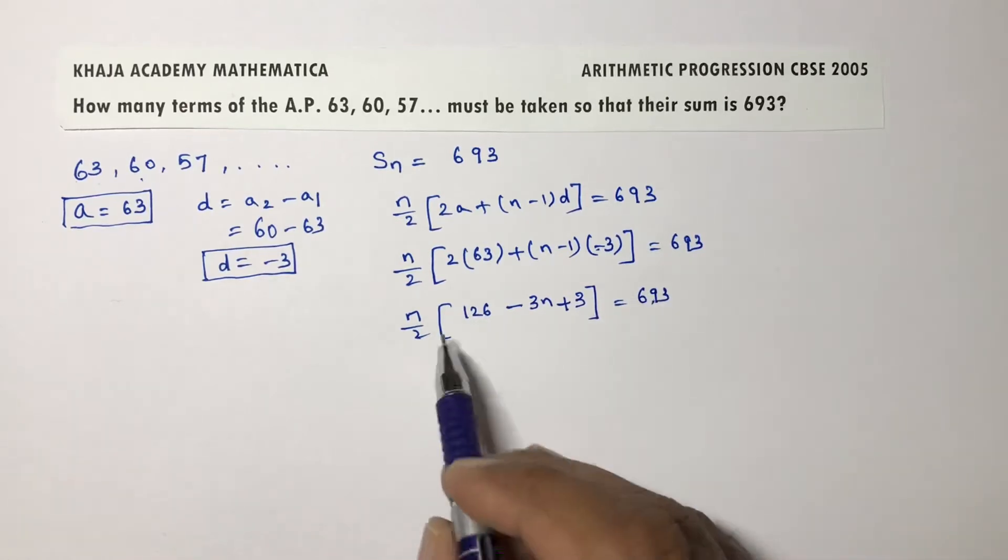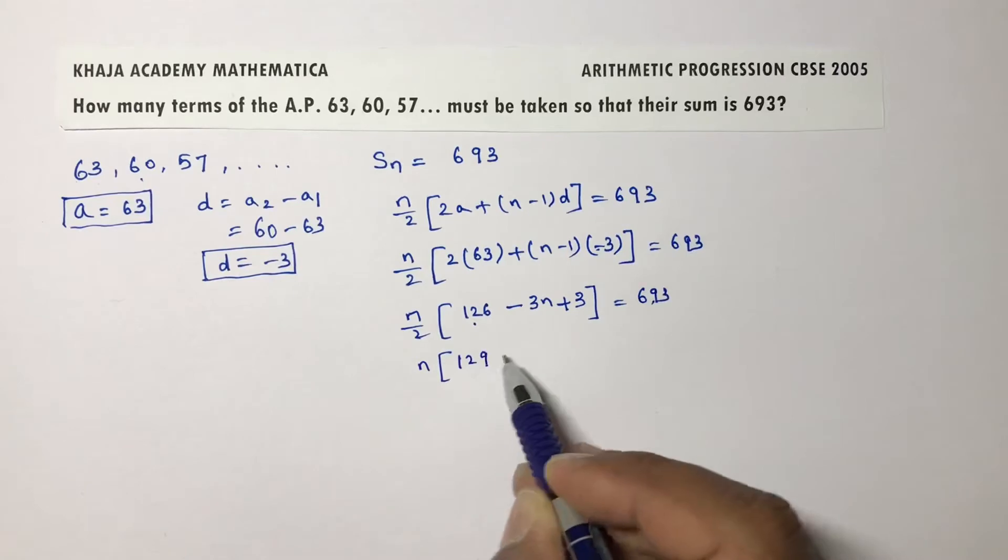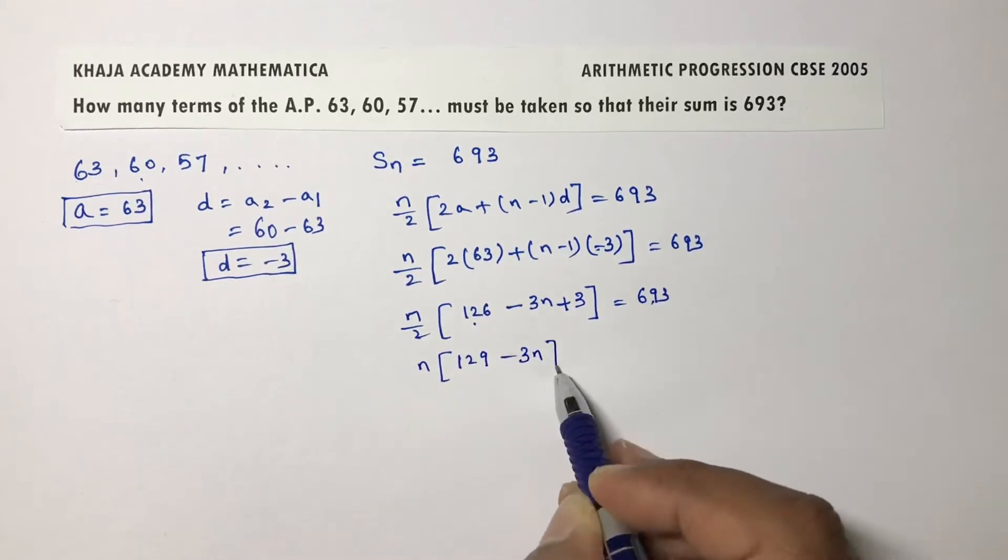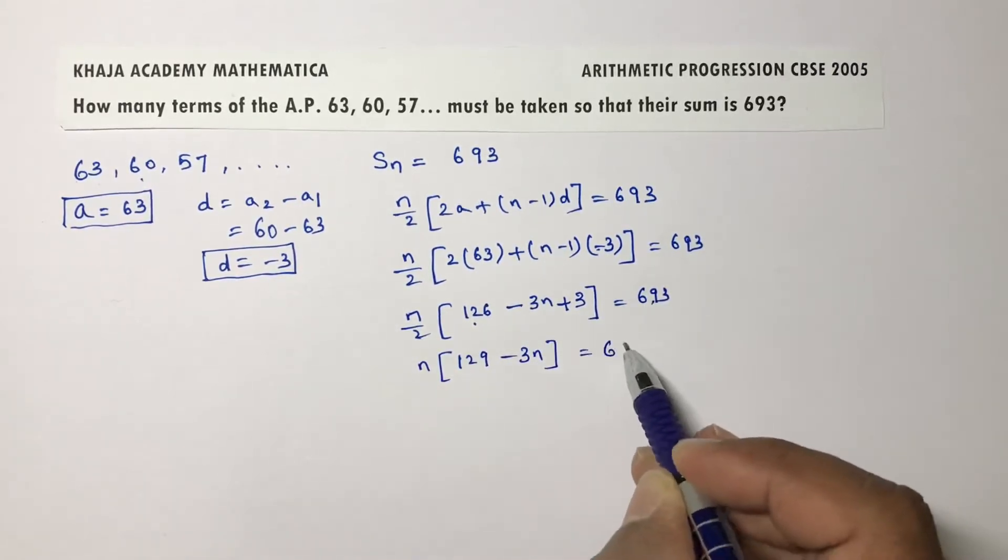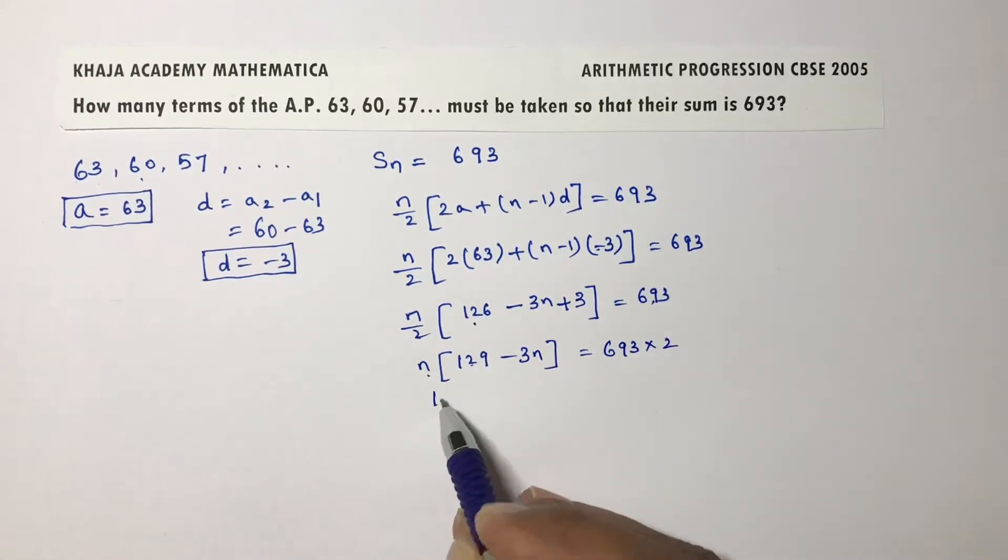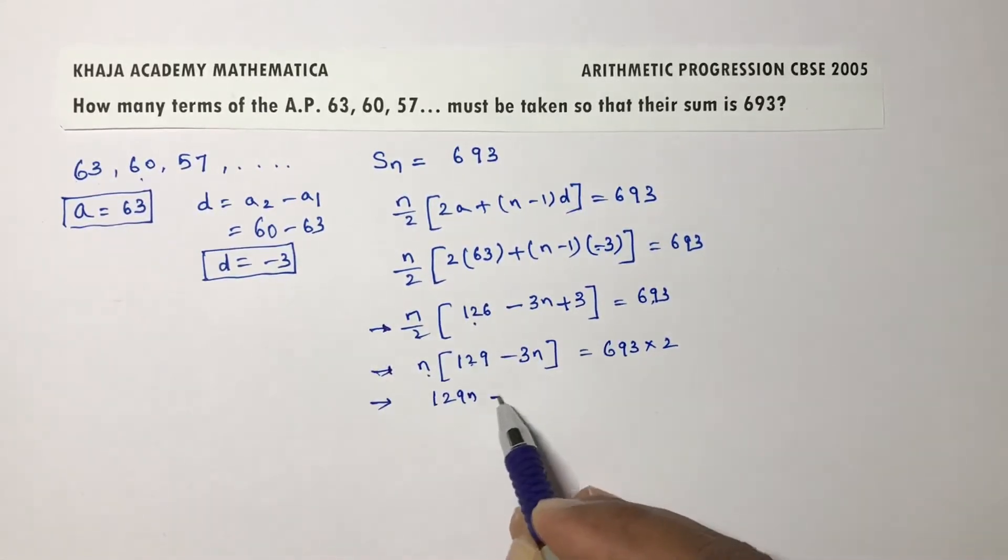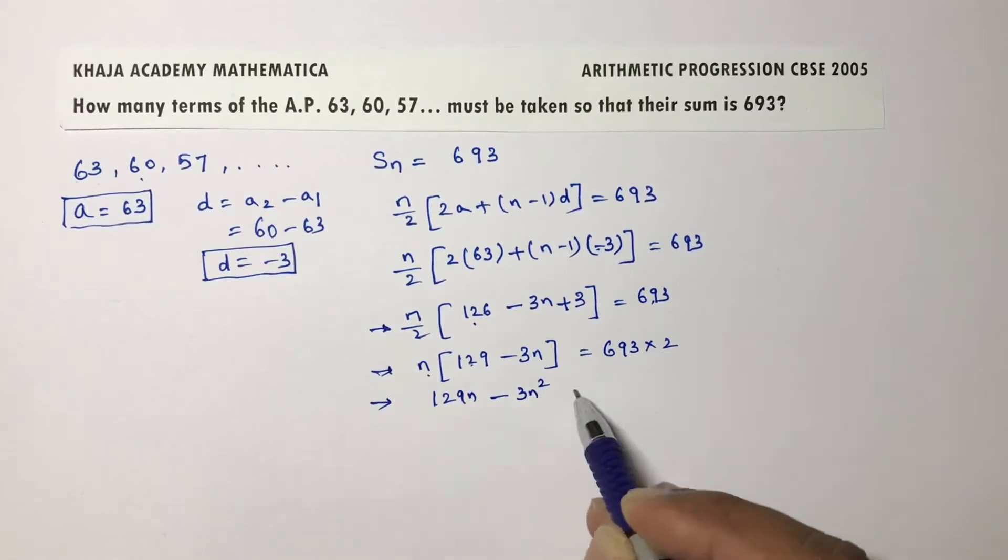If I cross multiply by 2, n into 126 plus 3 is 129, so n into 129 minus 3n equals 693 times 2. n into 129 is 129n minus 3n into n is 3n square.